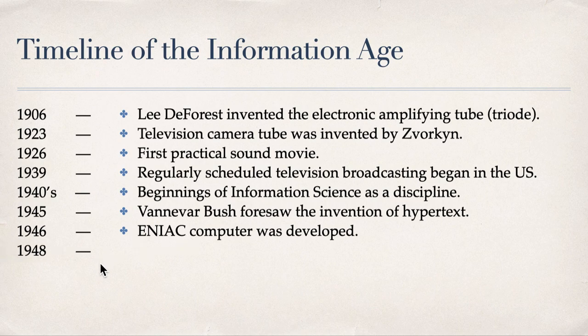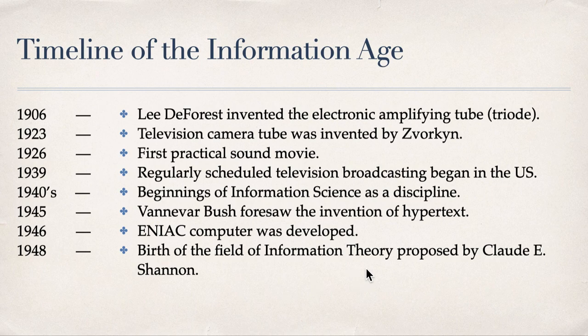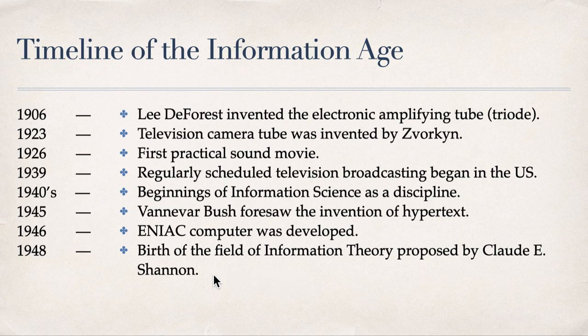Two years later in 1948, the field of information theory was proposed by Claude E. Shannon. Information theory is part of the broad field of complex systems, and Shannon is the key proponent, way back in 1948.